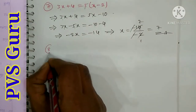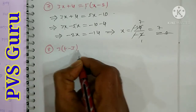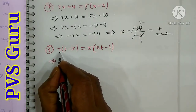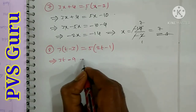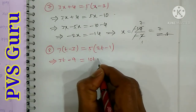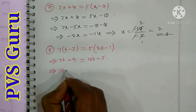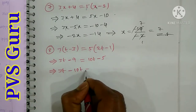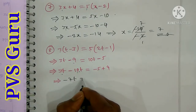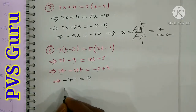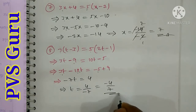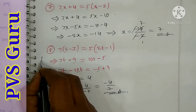Question number 8: 3 into (t minus 3) is equal to 5 into (2t minus 1). Expanding: 3t minus 9 equals 10t minus 5. Take 10t to the left side and minus 9 to the right side. 3t minus 10t is minus 7t, equal to minus 5 plus 9 equals 4. So t is equal to minus 4 by 7.